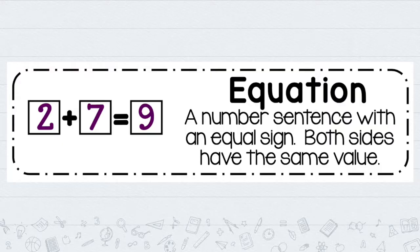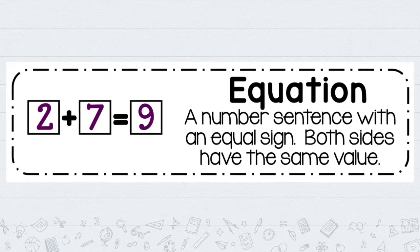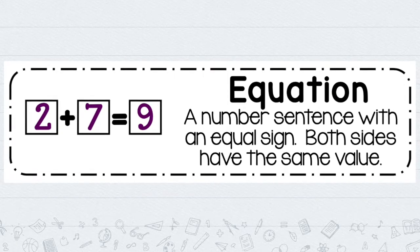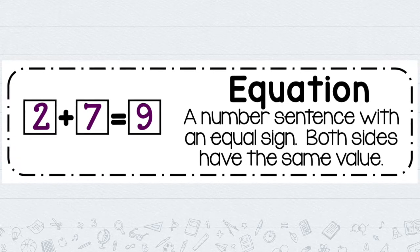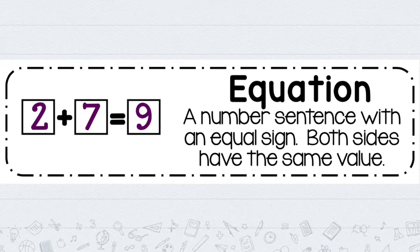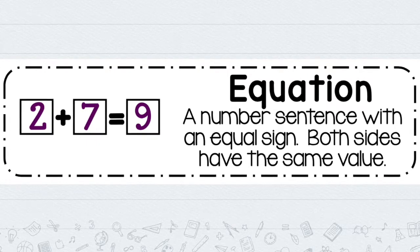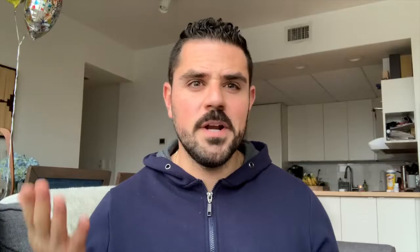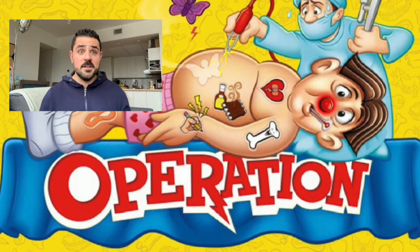Another word we should review before we talk about addition and subtraction is the word equation. Equation simply means a number sentence. Just like in grammar a sentence has to have a complete thought, in math a number sentence needs certain things as well: numbers, a math symbol, and an equal sign. Think about the word equation — equal sign. An equation needs different signs that represent different math operations. There are four different types of operations in math: addition, subtraction, multiplication, and division.